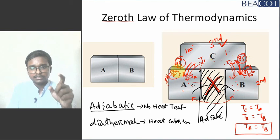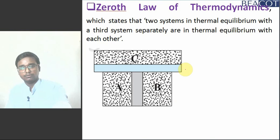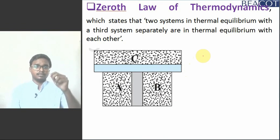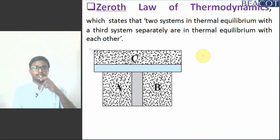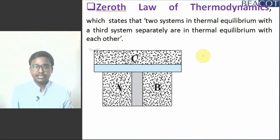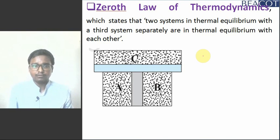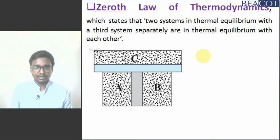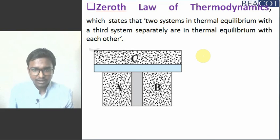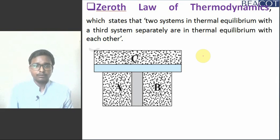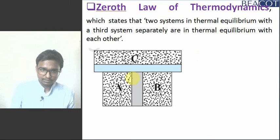This is called the zeroth law of thermodynamics. Two systems in thermal equilibrium with a third system separately are in thermal equilibrium with each other. That means if TA equals TC and TB equals TC, then TA equals TB.